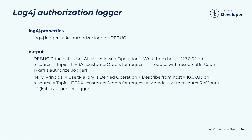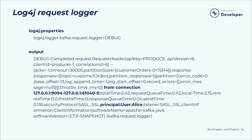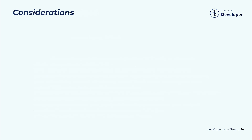The authorization logger generates info entries for operations that are denied, and debug entries for operations where access was granted. Both types of entry include details of the user principal, the client host, the operation being attempted, and the resource — such as topic — to which the operation was directed. The request logger adds details of the user principal and the client host at the debug level, and full details of the request when logging at the trace level. Kafka's application logging provides a solid basis for creating and analyzing audit logs to meet your specific audit needs, whether it's anomaly detection, debugging, or compliance.